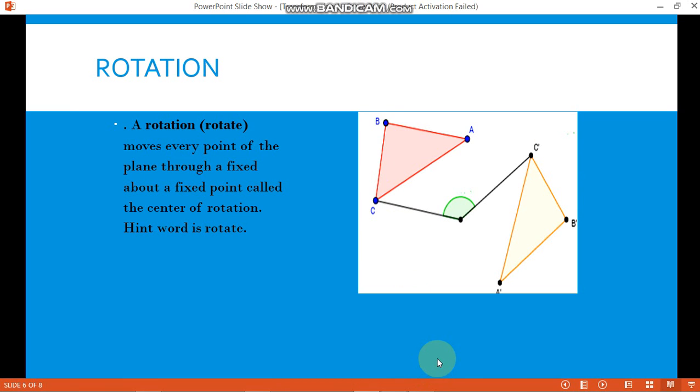Then we also have rotation. A rotation moves every point of the plane through a fixed point called the center of rotation. So the hint word is rotate. This one is the figure for the rotation. If you can see, the object has been rotated. Earlier it was here, and then with the rotation, it's now here. The center of rotation is this one.